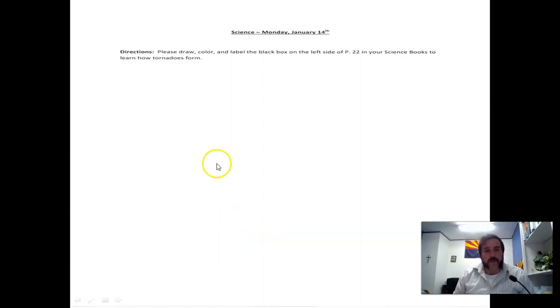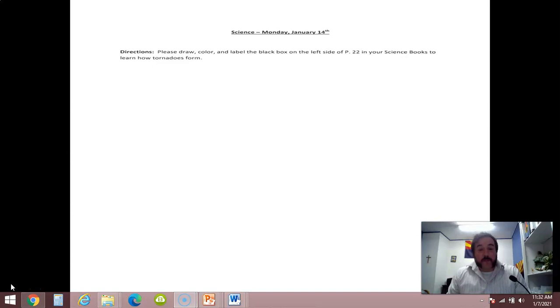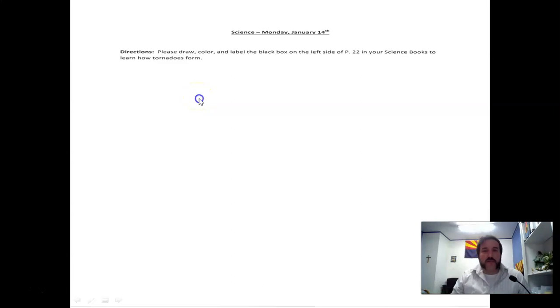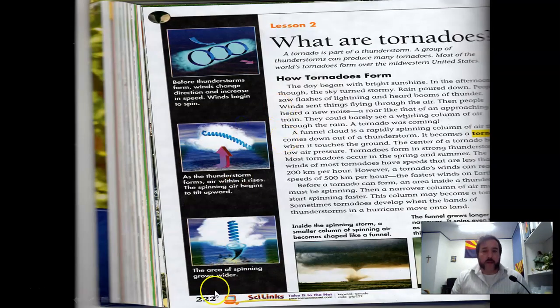Here's your assignment for today. If you look at page 222, I'm sorry about that. Page 222. So again, here, page 222. Draw, color and label the black box on the left side in your science book to learn how tornadoes form. I actually want you to draw the three stages. And that's actually right here. Just so you know what I'm talking about. Again, page 222. This black box right here.